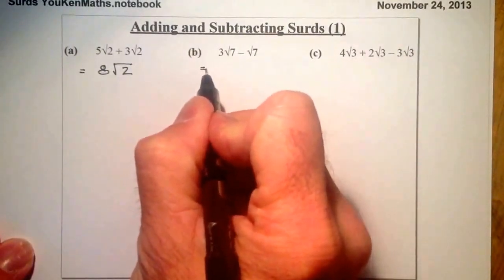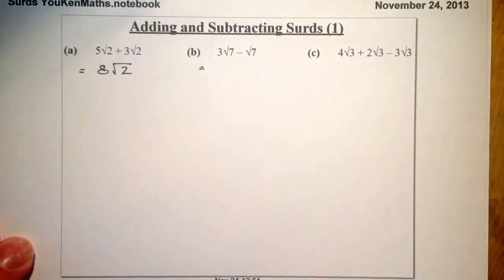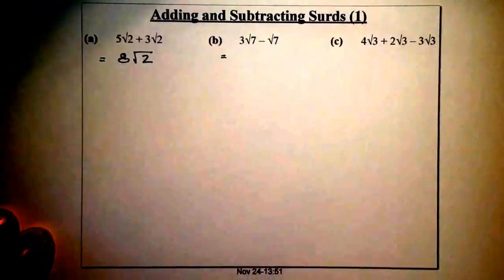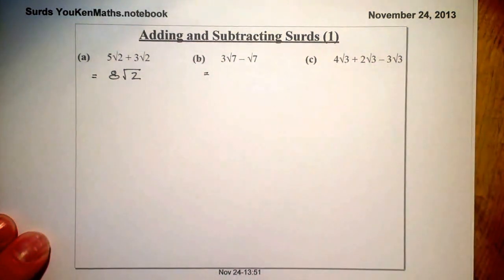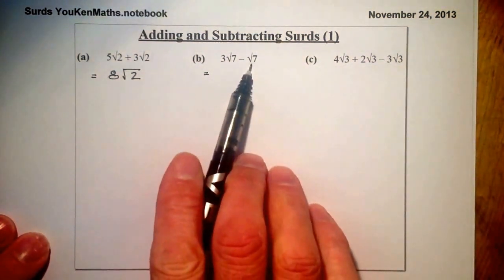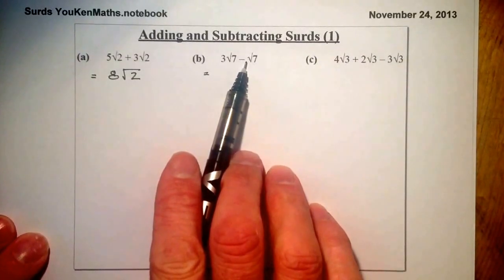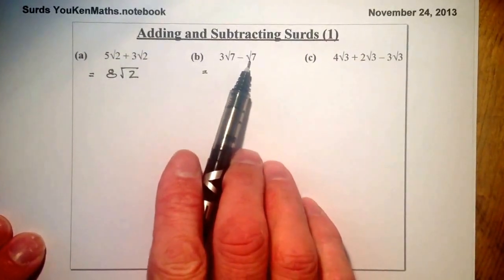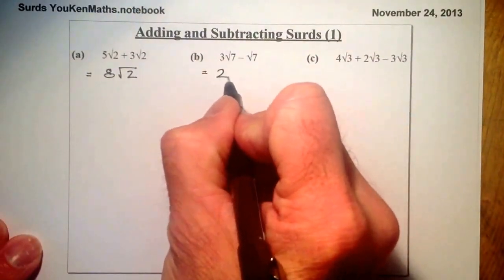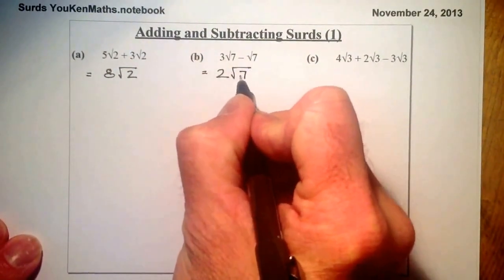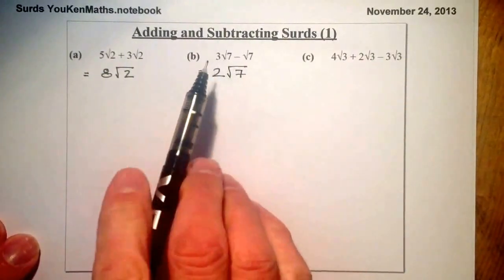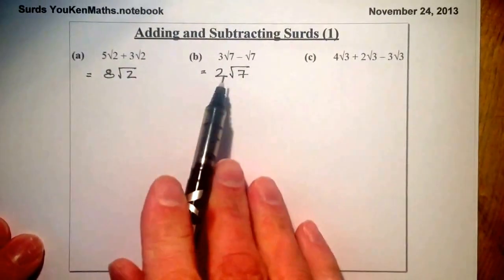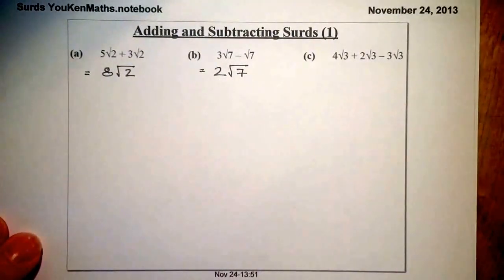Looking at b — hopefully you can try these by freezing the video and going ahead yourself. I've got three root seven minus root seven. Remember, when you just see a root seven, there's an implied one in front, so it's one root seven. Three root seven take away one root seven gives me two root seven — I've got three of them, I take one away, which leaves me two root seven.